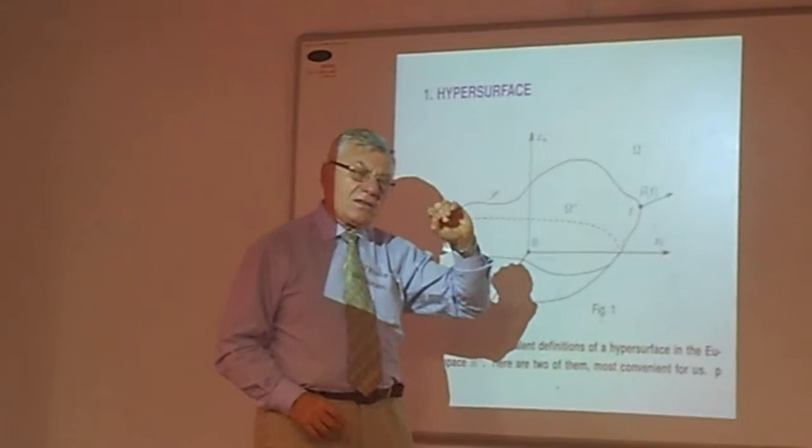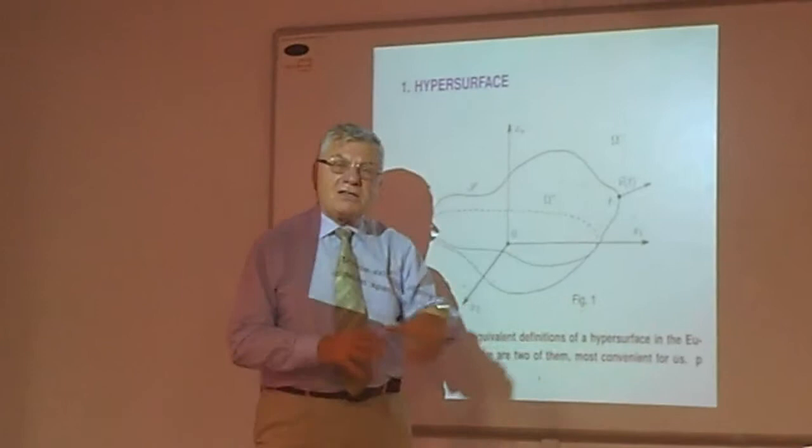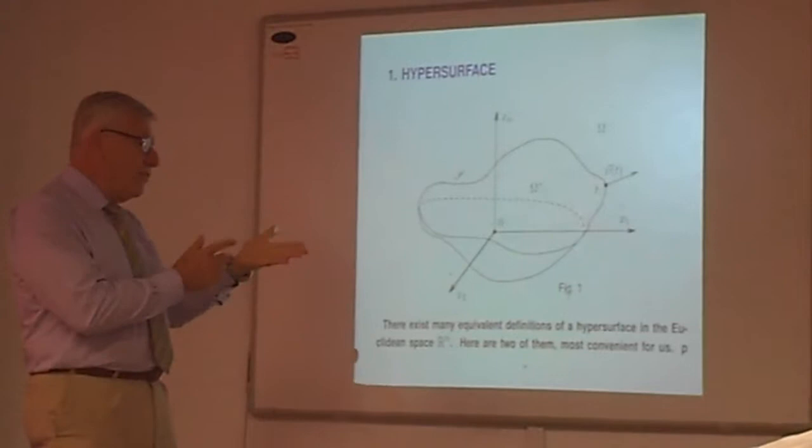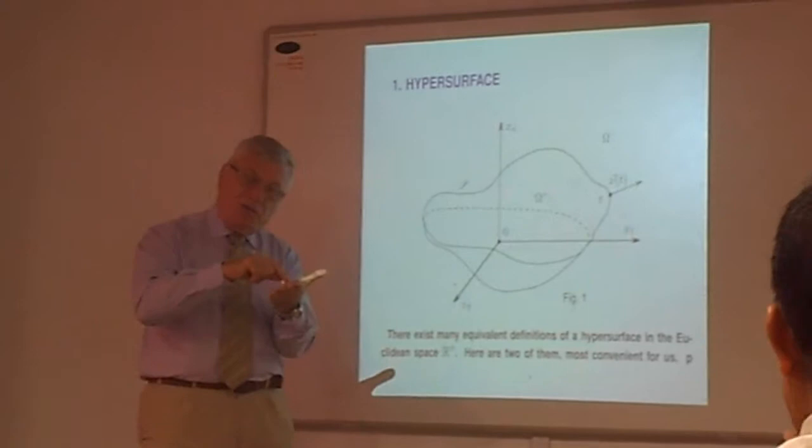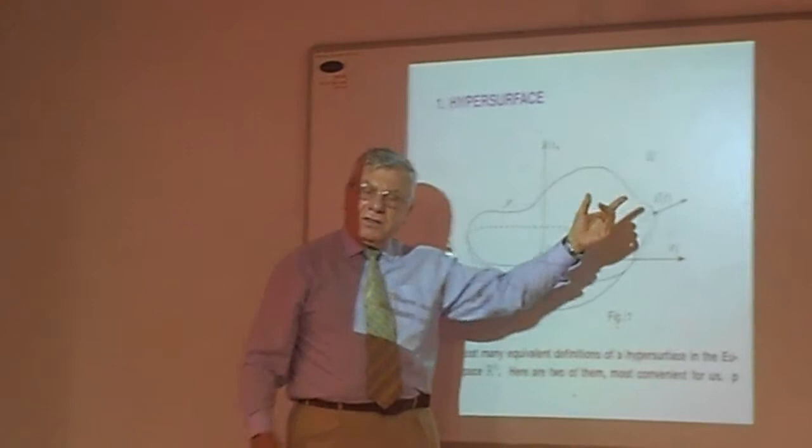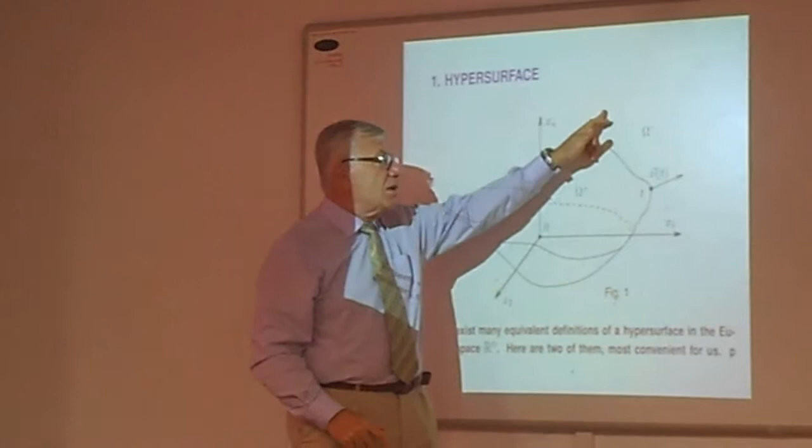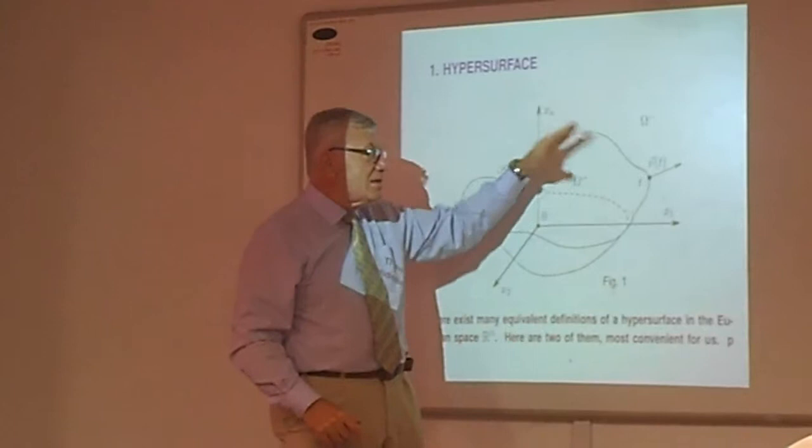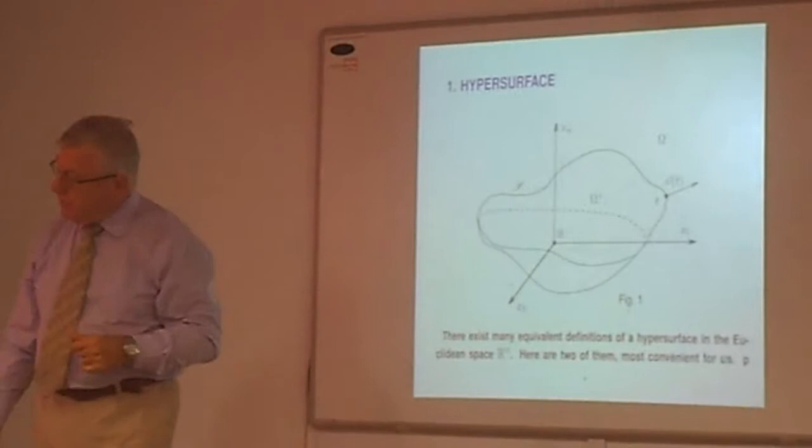These vectors are one of the vector fields which you can define on the surface. Vector field means vectors at any point of the surface. You have surface, and at any point of this surface, you have vectors. This is the example of vector field, which is orthogonal to the surface at any point. When you move it here, it will be this way, and when it comes here, it's this way. It's orthogonal. It's a normal vector field.